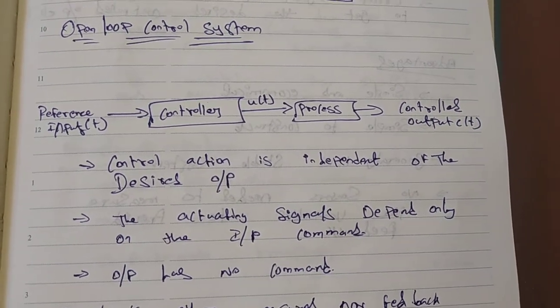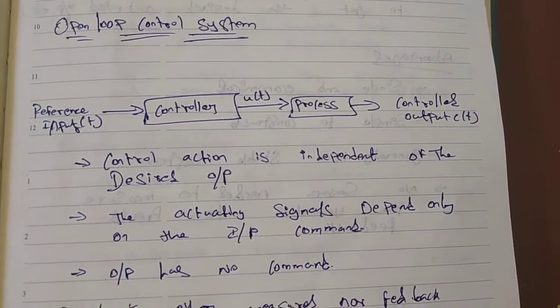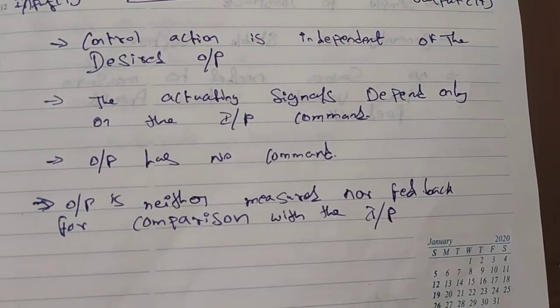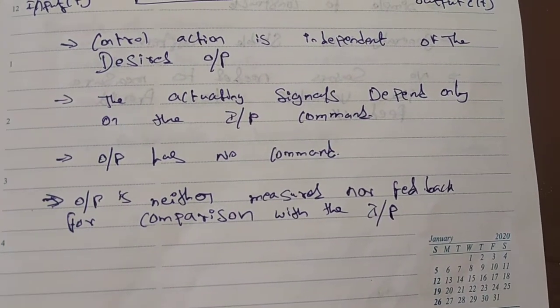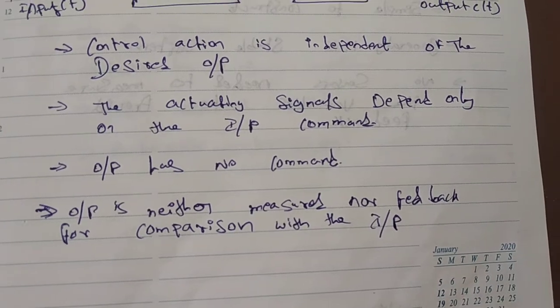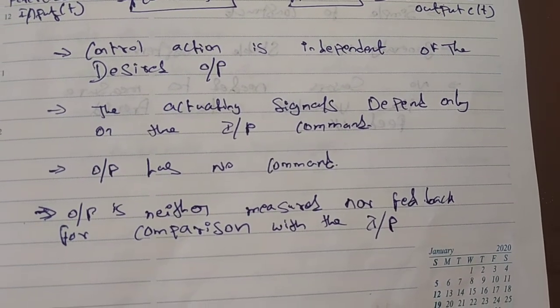The controller is available, the process is available. This is an independent system. The output is available. The input command will be used.